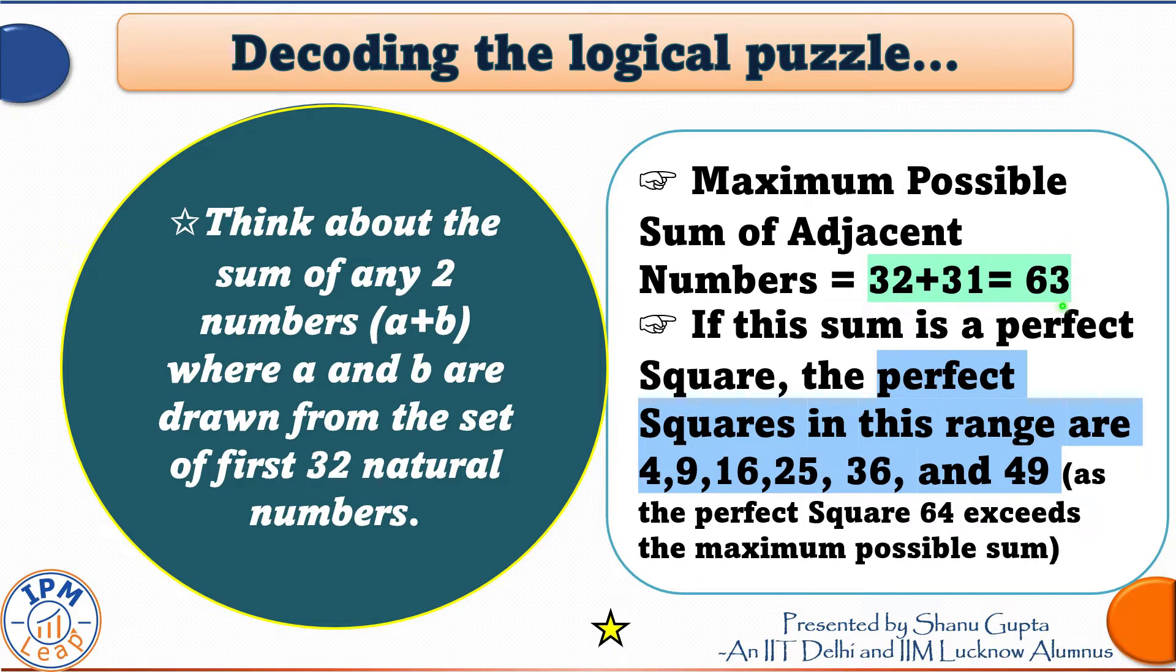And because this sum has to be a perfect square, let's look at the perfect squares in this range. They are 4, 9, 16, 25, 36 and 49. Remember, the perfect square 64 is not allowed as it exceeds the maximum possible sum of 63.